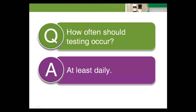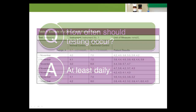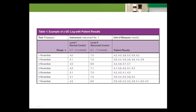If the test is stable for less than 24 hours, or some change has occurred which could potentially affect test stability, controls should be assayed more frequently. Regular testing of quality control products creates a QC database that the laboratory uses to validate the test system. Validation occurs by comparing daily QC results to a laboratory-defined range of QC values, calculated from QC data collected from testing of normal and abnormal controls.